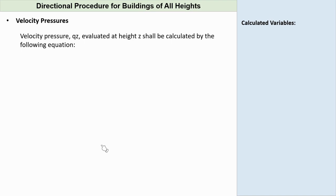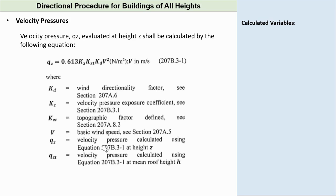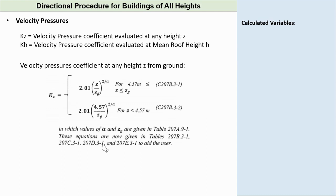The velocity pressure. Velocity pressure, Qz, evaluated at height z shall be calculated by the following equation: Qz equals 0.613 times Kz, KZT, KD, V squared, where the velocity is in meters per second. We already have all the values of the variables to be used in the equation except for Kz. Kz is the velocity pressure coefficient provided in Section 207B.3.1 of the code. Velocity pressure coefficient at any height z from ground can be calculated using the following formulas.